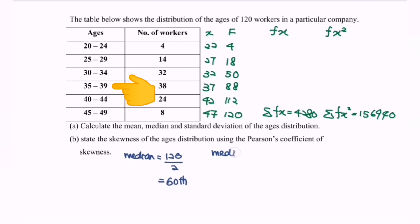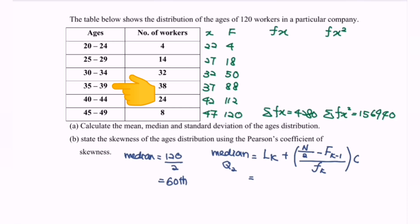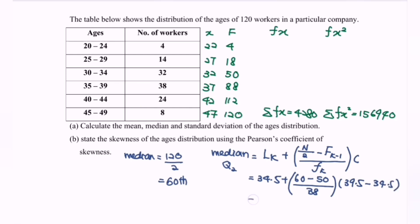The formula for the median (Q2) is: lower boundary + [(n/2 − cumulative frequency of previous class) / frequency of median class] × class size. The median class is 35–39, so: 34.5 + [(60 − 50) / 38] × (39.5 − 34.5). With the calculator, the median equals 36.1 (3 significant figures).